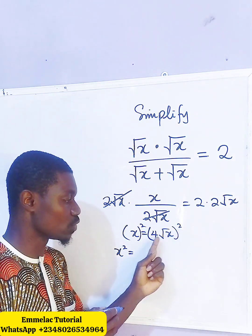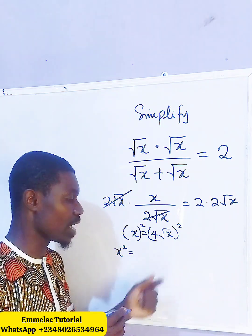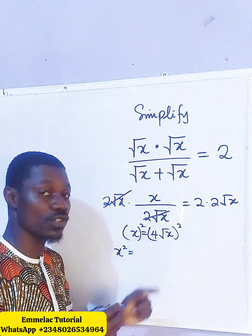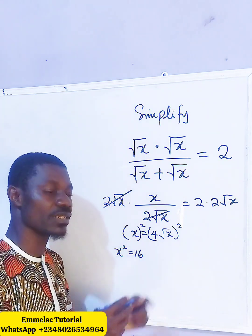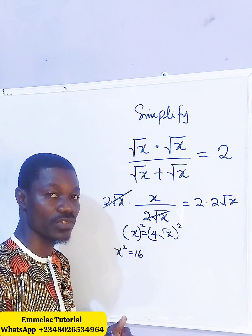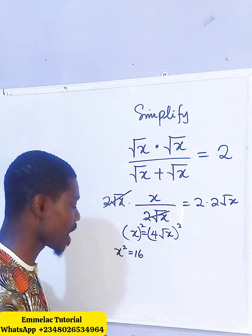Now distributing 2 to both terms in the parentheses here, 4 to the power of 2 gives us 16 and the square root of x to the power of 2 will give us x.